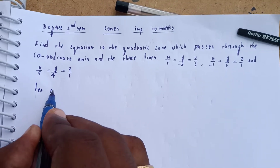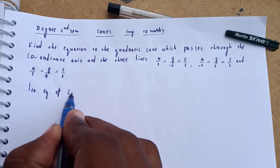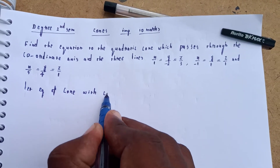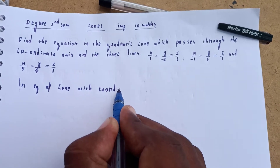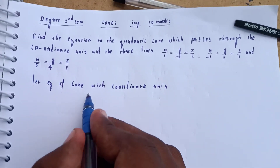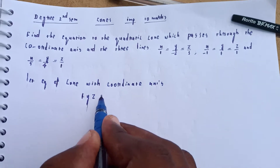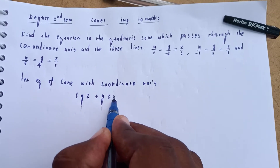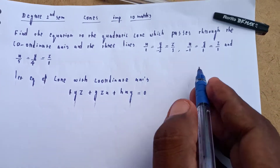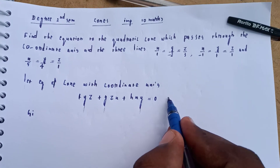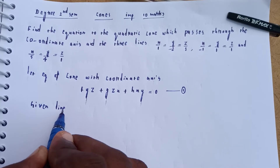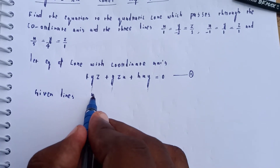First, let the equation of the quadratic cone with coordinate axes be: f·yz + g·zx + h·xy = 0. This is equation number 1. The given lines must lie on this cone.